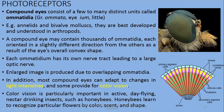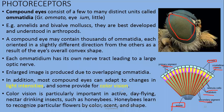A compound eye may contain thousands of small lenses or omatidia, which are oriented in slightly different directions from each other. As a result of the eye's overall convex shape, a large image is produced. Within each ommatidium you can see the crystalline cone, retinal cells, rhabdom, secondary pigment cells, and primary pigment cells, ultimately connected with axons or neurons for transmission of impulses. Each ommatidium has its own nerve tract connected to the optic nerve, and large images are produced due to the overlapping lenses.